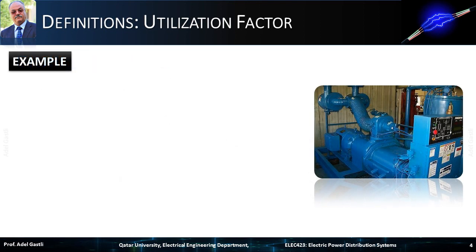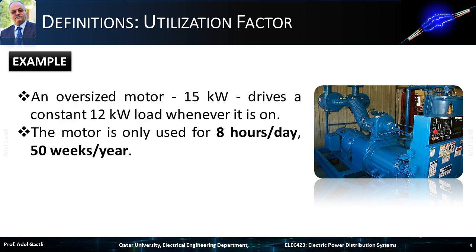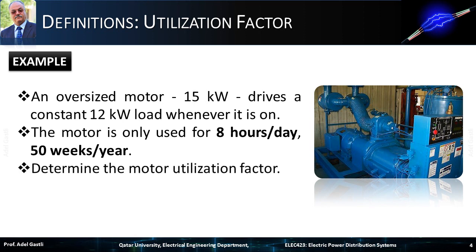Let's see an example of utilization factor calculation. An oversized motor of 15 kW drives a constant 12 kW load whenever it is on. The motor load factor is then 12 over 15, which equals 80%. This motor is only used for 8 hours per day and 50 weeks per year. We want to determine the motor utilization or use factor.